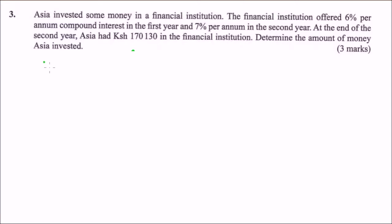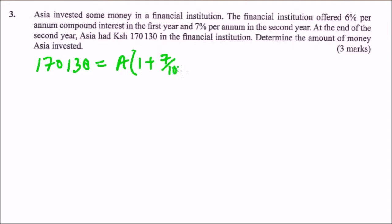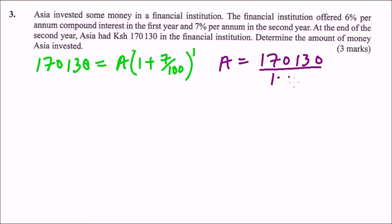We note that 170,130 is the money obtained at the end of the second year. This is equal to the amount obtained in the first year multiplied by (1 + 7/100) to the power of 1. So A = 170,130 ÷ 1.07, which gives us 159,000 using your calculator.